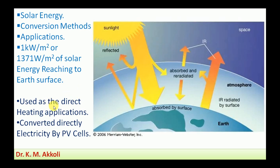Solar energy can be used directly for heating applications, and it can also be converted directly into electricity by photovoltaic (PV) cells. By using photovoltaic cells we can convert heat energy into electricity. There are two main methods, and their sub-classifications will be discussed next.